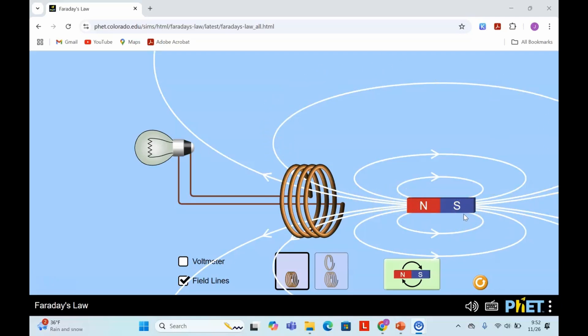It's important to note that these lines don't simply stop at the poles. They actually continue through the inside of the magnet forming a complete loop. The magnetic field is stronger near the magnet and as you move farther away, the magnetic field is weaker.